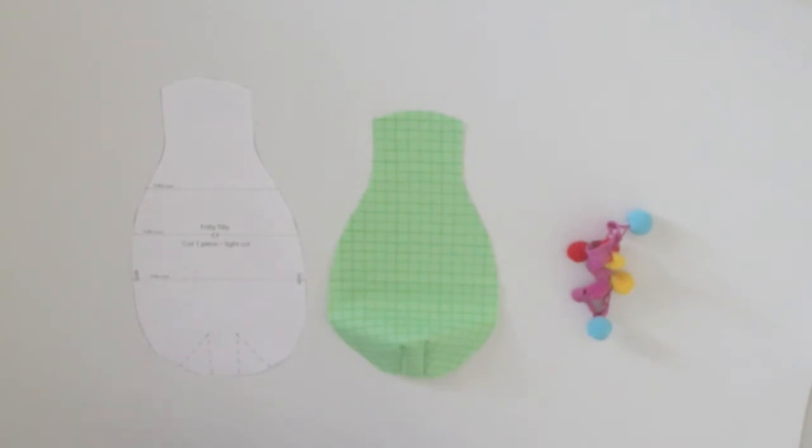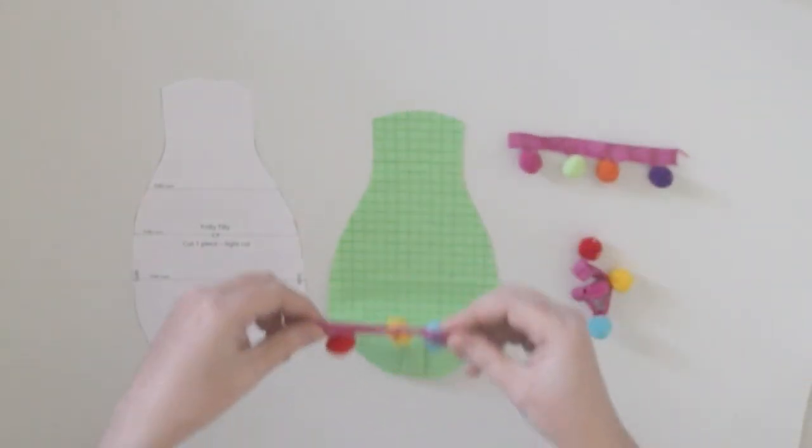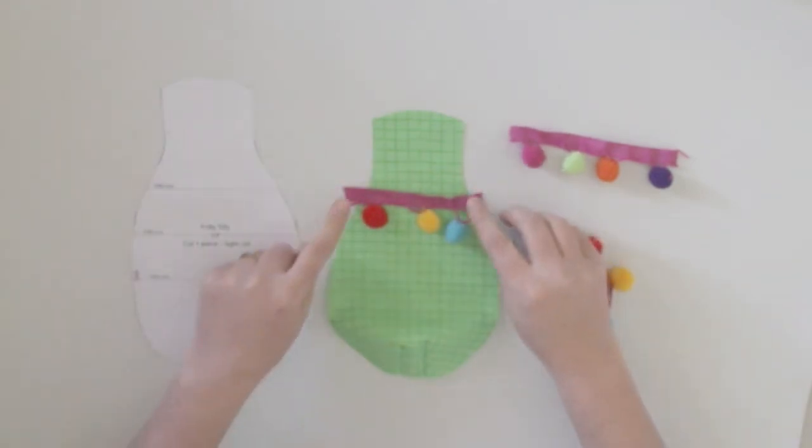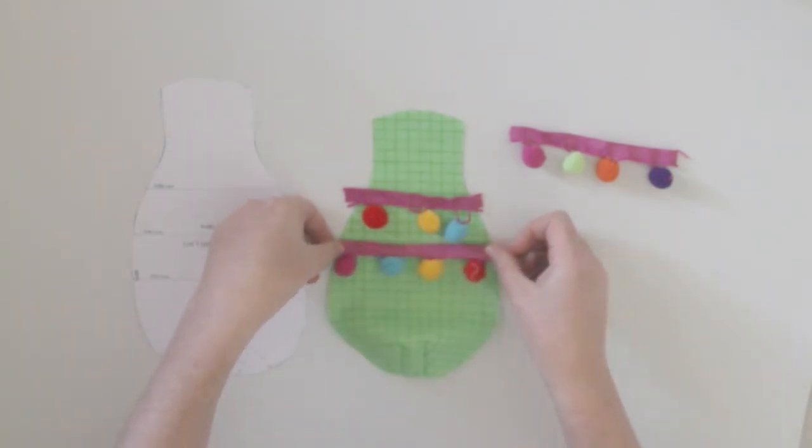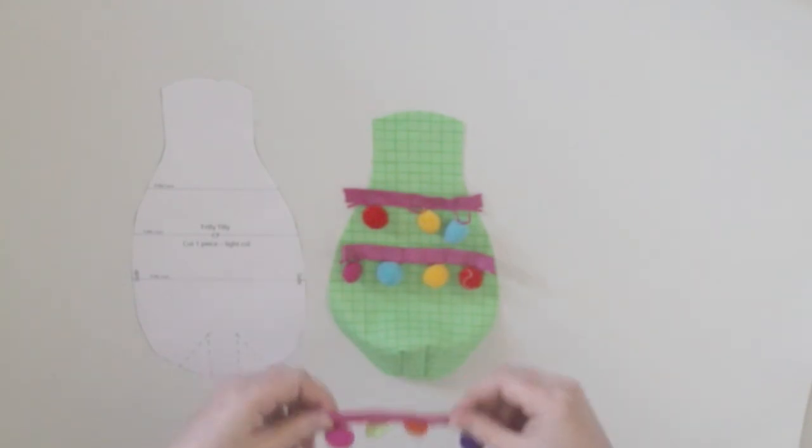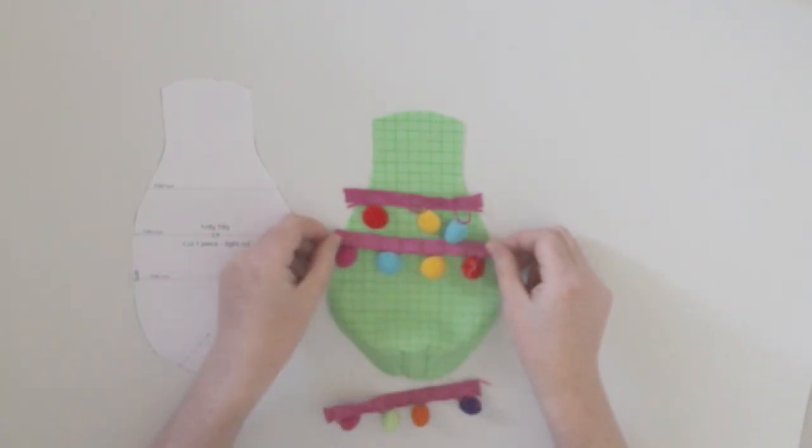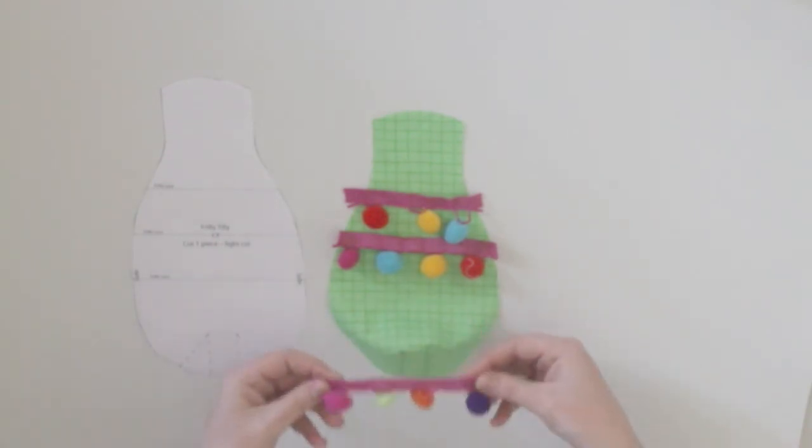And then, you are going to take your frilly trim. And you are going to line it up on your centre front piece, as per these dotted markings on your pattern. So we need three. So, roughly, here goes. One. And then the next one, there. And, just move that up a bit.